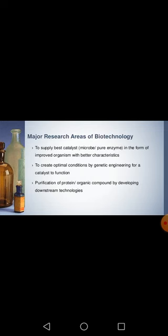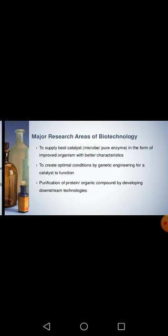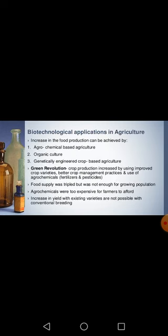To summarize, the three major research areas of biotechnology are: first, supplying the best catalyst — either a microorganism or enzyme — to get the best quality product; second, creating conditions through genetic engineering to obtain the best products; and third, purification of proteins and downstream processing of products before launching them in the market.